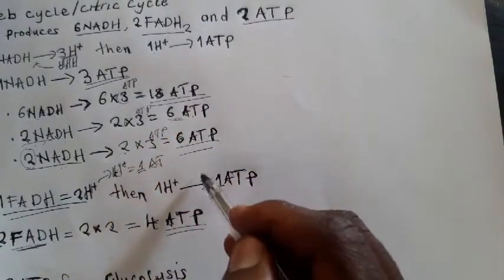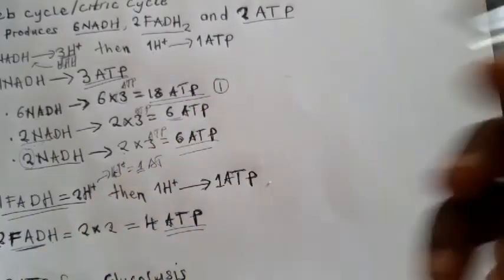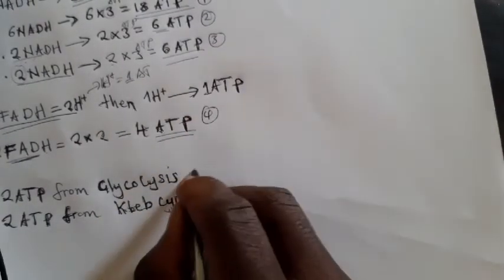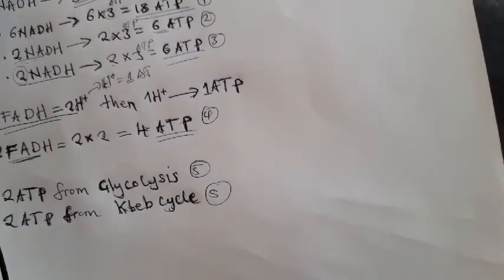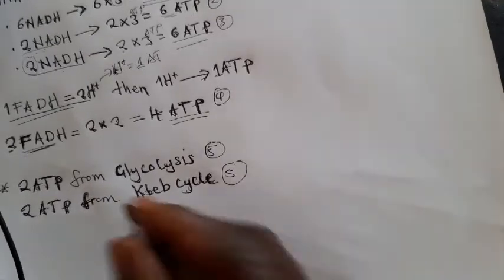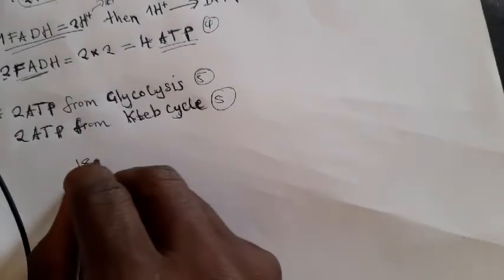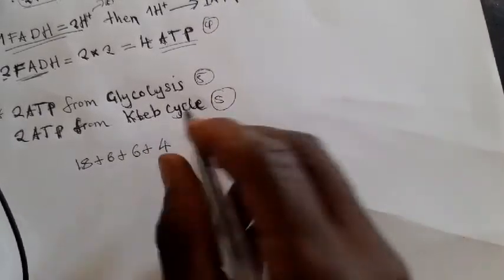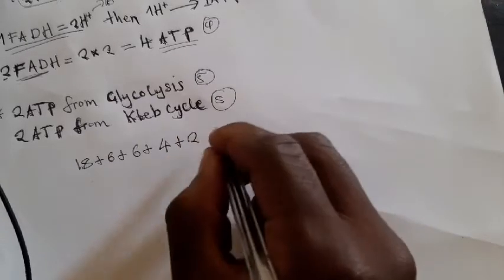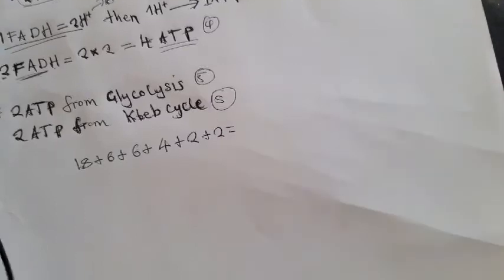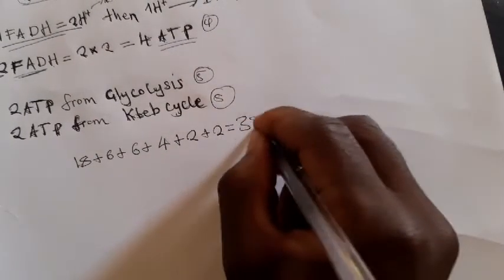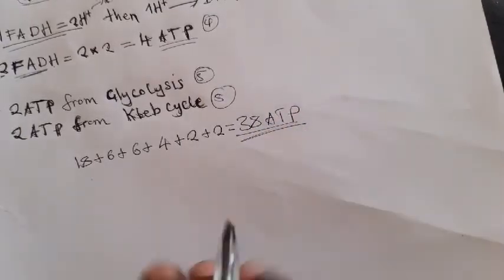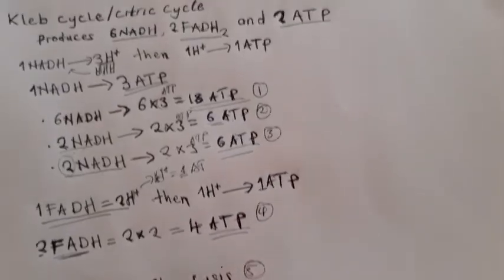Now we can calculate the total ATP by adding all of these together: 18 (from 6 NADH in Krebs) plus 6 (from 2 NADH in glycolysis) plus 6 (from 2 NADH in transition step) plus 4 (from 2 FADH2) plus 2 (direct from glycolysis) plus 2 (direct from Krebs cycle) equals 38 ATP. This is how the total ATP is calculated.